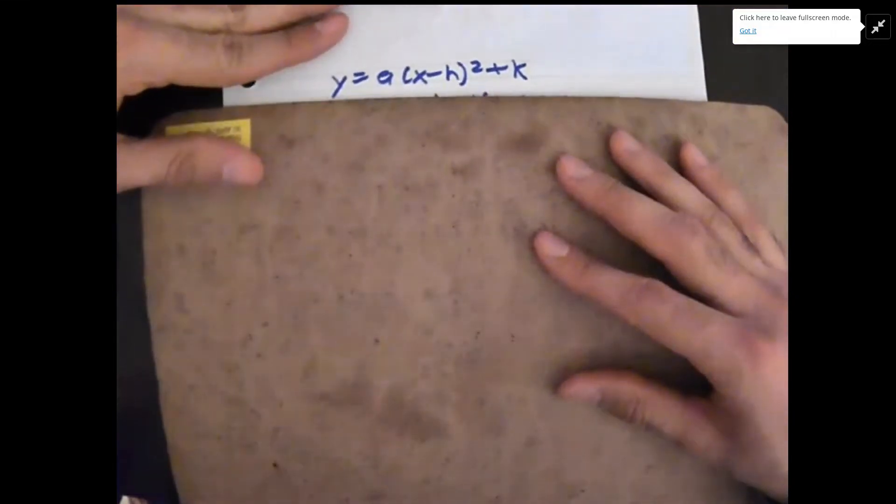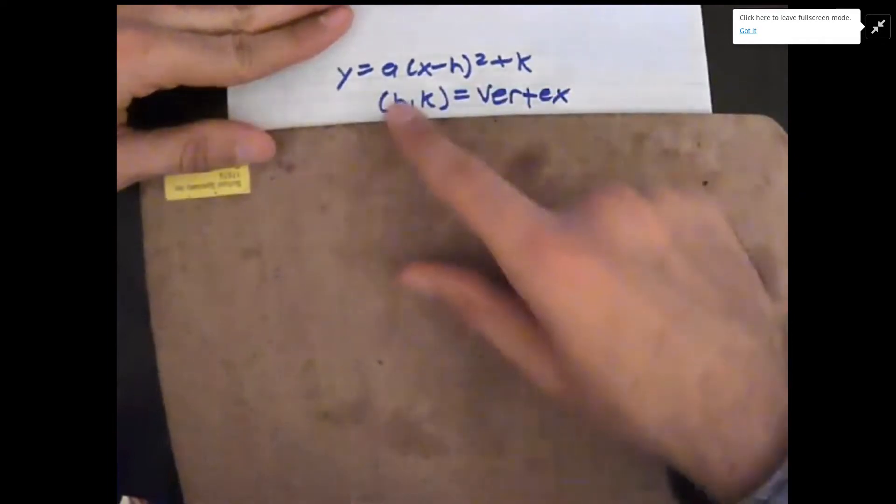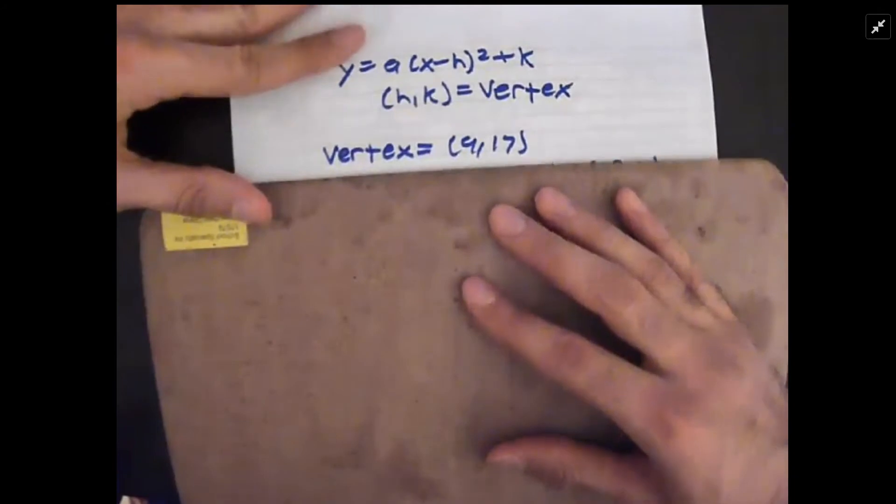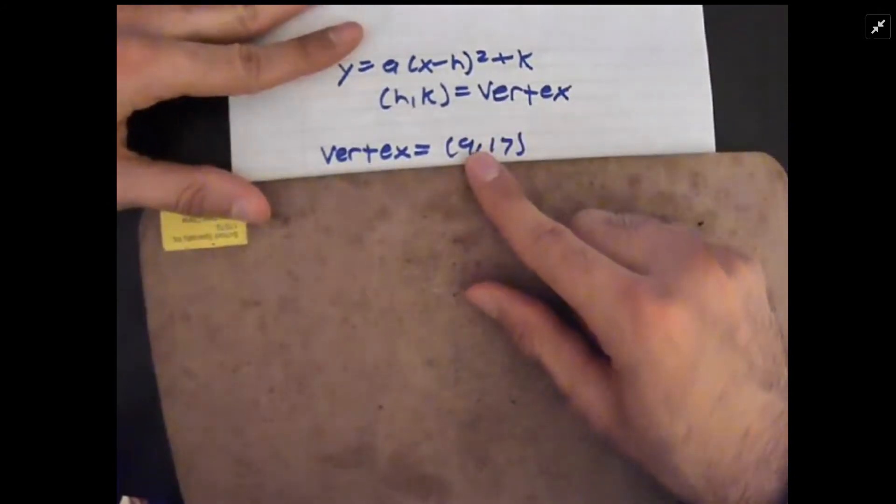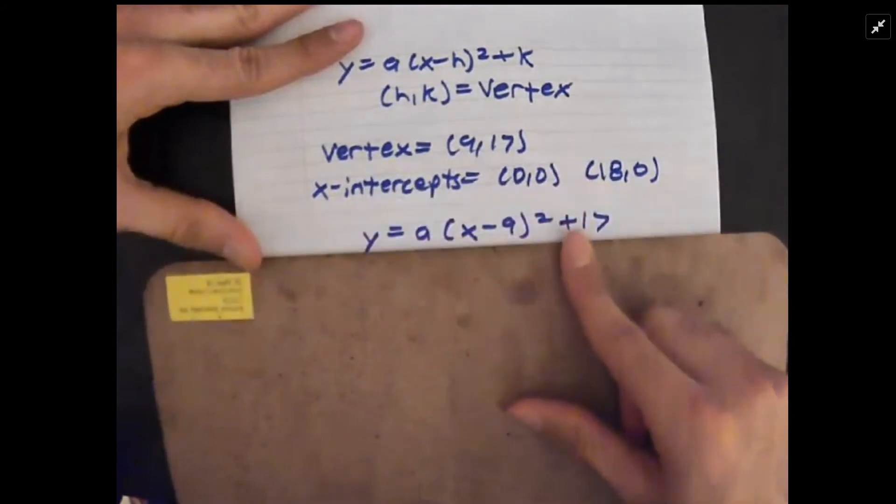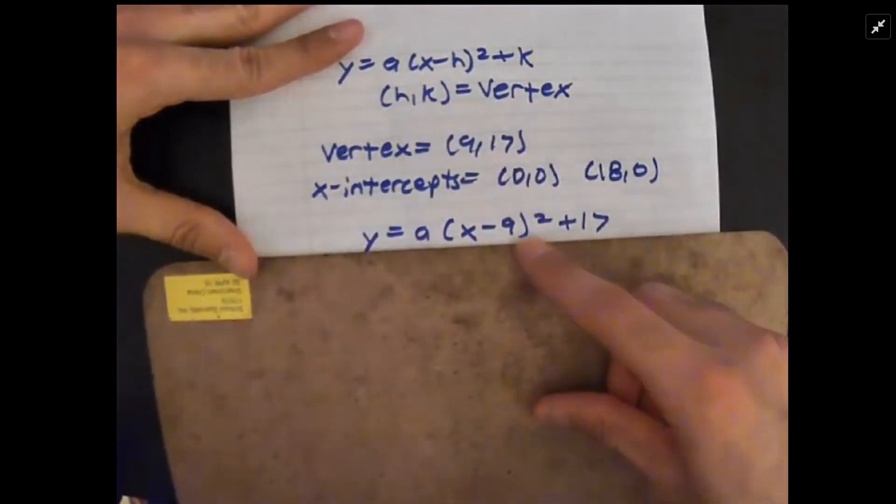Starting off, this is the vertex form with h,k being the vertex, so the point here and here. And we know our vertex is (9,17) from the problem and that our x-intercepts are right here.